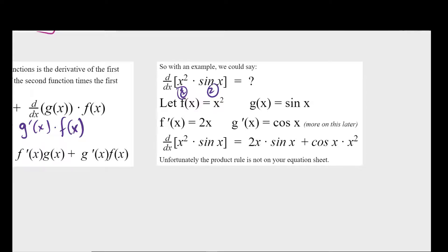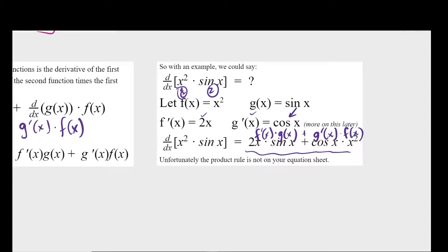In an example, we have two functions labeled one and two. The derivative of the first times the second, plus the derivative of the second times the first. Note that the derivative of sine of x is cosine of x — we'll talk more about this later. The full product rule expansion is: derivative of first times second, plus derivative of second times first. Importantly, this is not on your equation sheet, so you need to get used to it through practice.